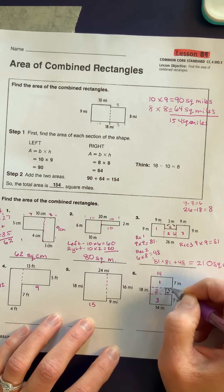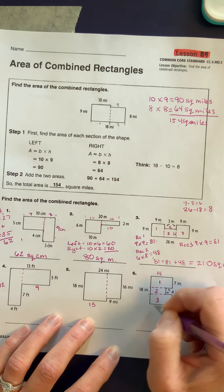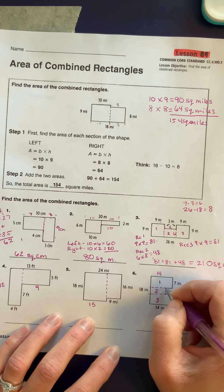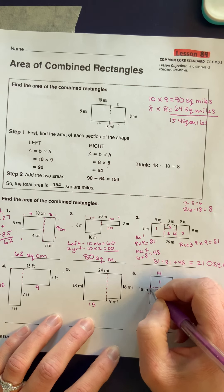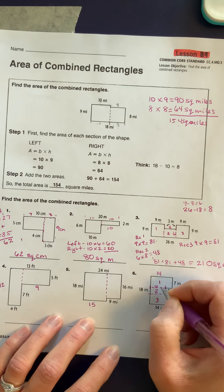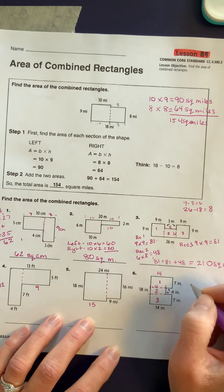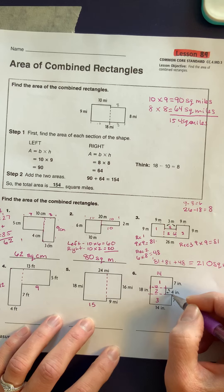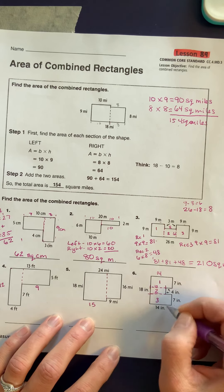I do see it. If this is 4 and it's 14 total, that means from here to here is going to be 10. So this would be 10 times 4. And my last one would be 7 times 14.